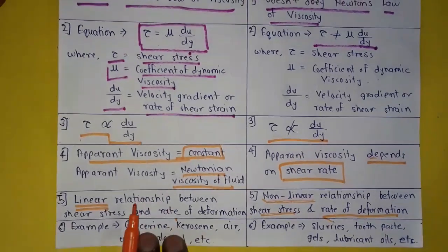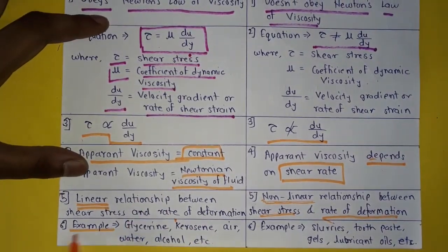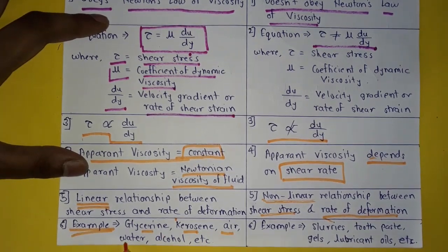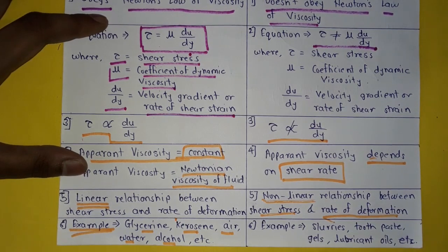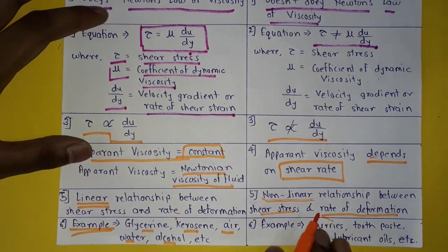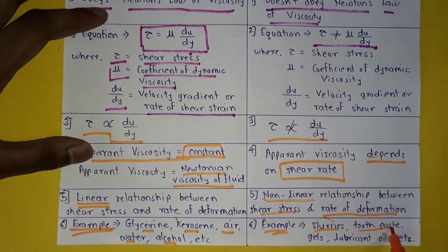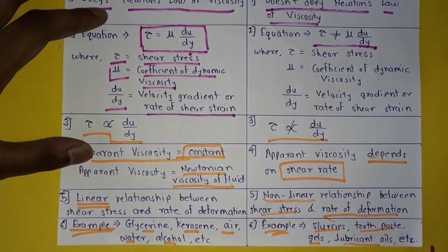Examples of Newtonian fluid are glycerine, kerosene, air, water, alcohol, etc. Examples of non-Newtonian fluid are slurries, toothpaste, gels, lubricant, etc.